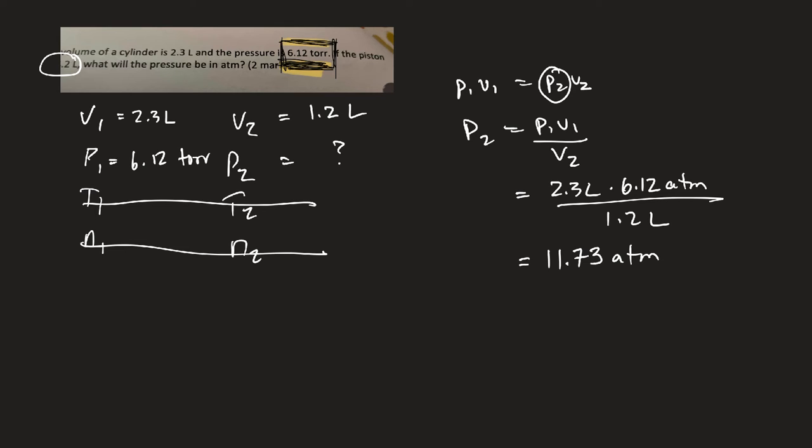But then, that's pretty high pressure. But then... oh, hold on. I got this wrong. I was thinking atmospheres because that's what I knew it wanted, but that first question is torr. So when I do this, my answer is 11.73 torr. But the question says, what is the pressure in atmospheres? So this would be correct, but they want you to convert that now to atmospheres.